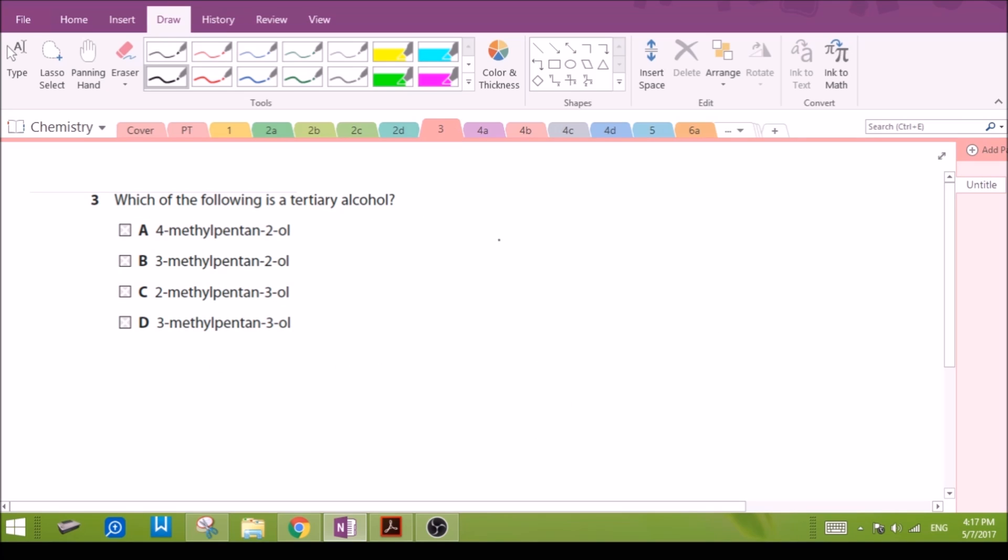Which of the following is a tertiary alcohol? Tertiary alcohol means the carbon that contains the hydroxyl group is joined to three other carbons. Let's look at the four options. A: 4-methylpentan-2-ol, so five carbons, the hydroxyl group is on carbon number two, and then there's a methyl group on carbon number four. This carbon is only joined to two other carbons so this is actually only a secondary alcohol.